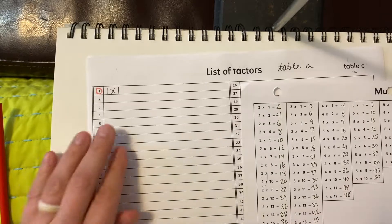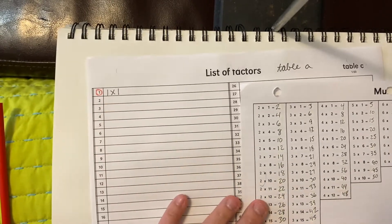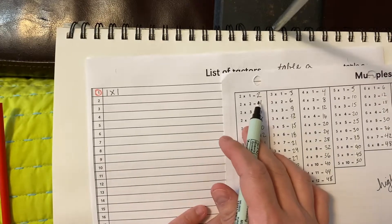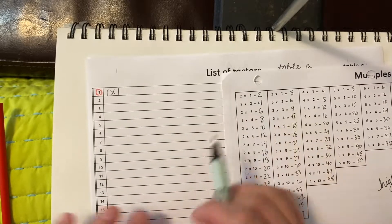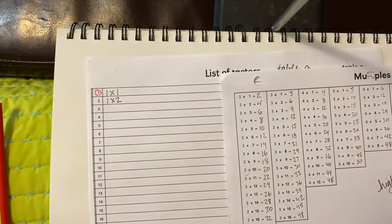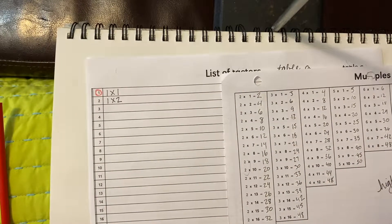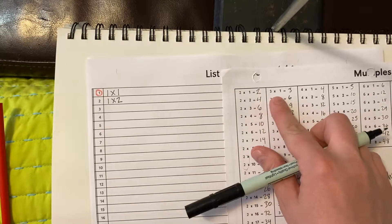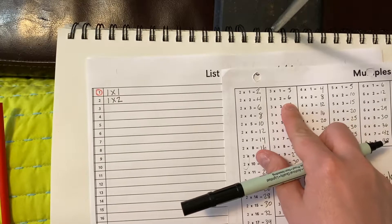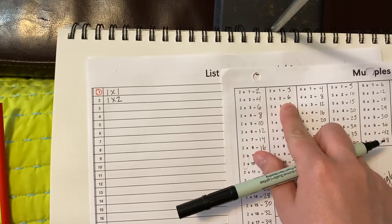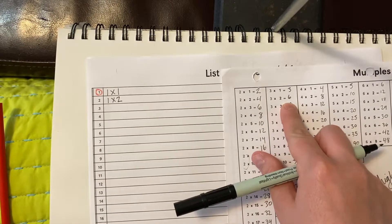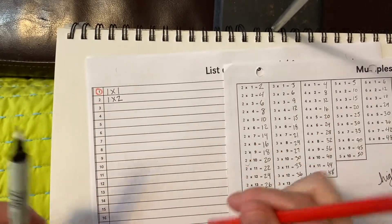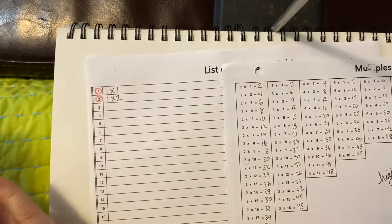Now let's think about all the ways to make 2. We can come back over here to our table A and look for the answer of 2. There's an answer: 2 times 1. Then it goes on to 4, which is bigger than 2. 3 times 1 is 3, but then it goes to 6. So this is the only way. Circle that.